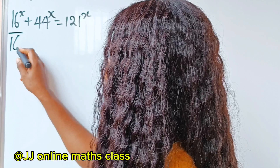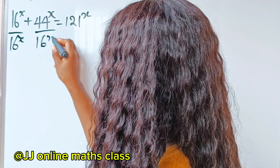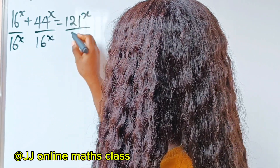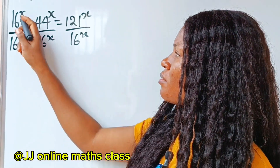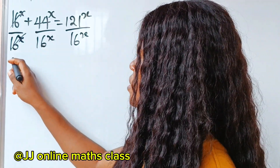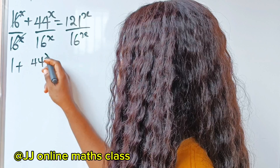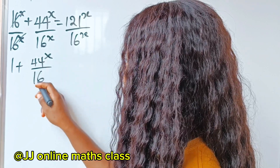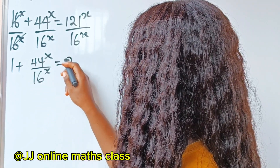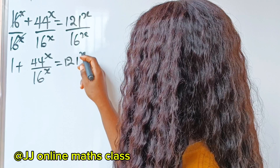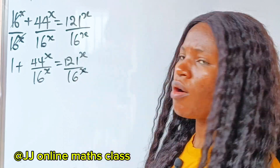So we have this divided by 16 to the power of x, divided by 16 to the power of x, divided by 16 to the power of x. Now this will divide to give us: 1 plus 44 to the power of x, divided by 16 to the power of x, is equal to 1 to 1 to the power of x, divided by 16 to the power of x.